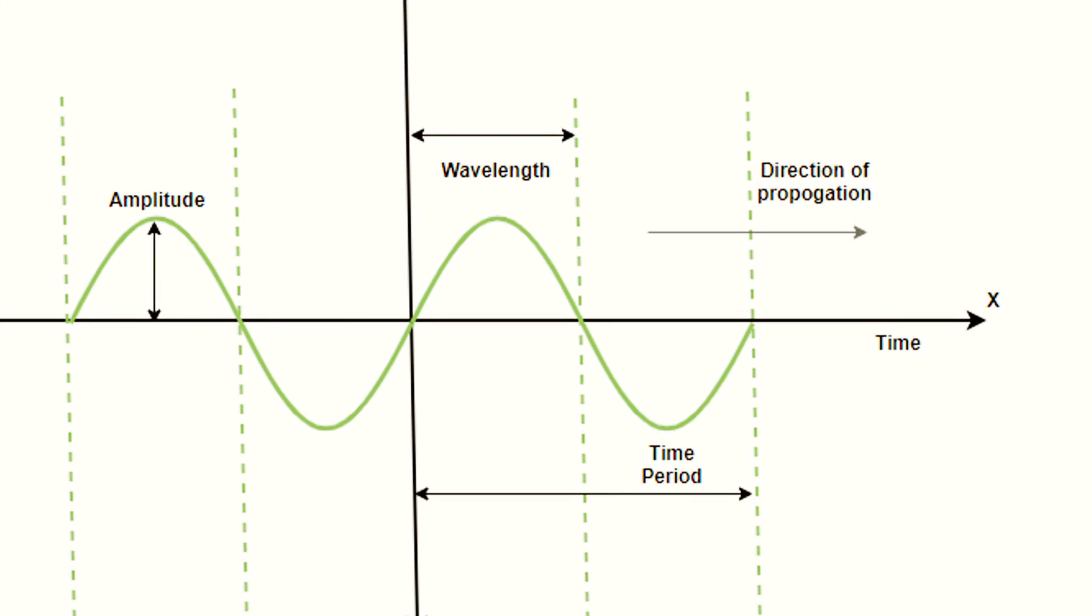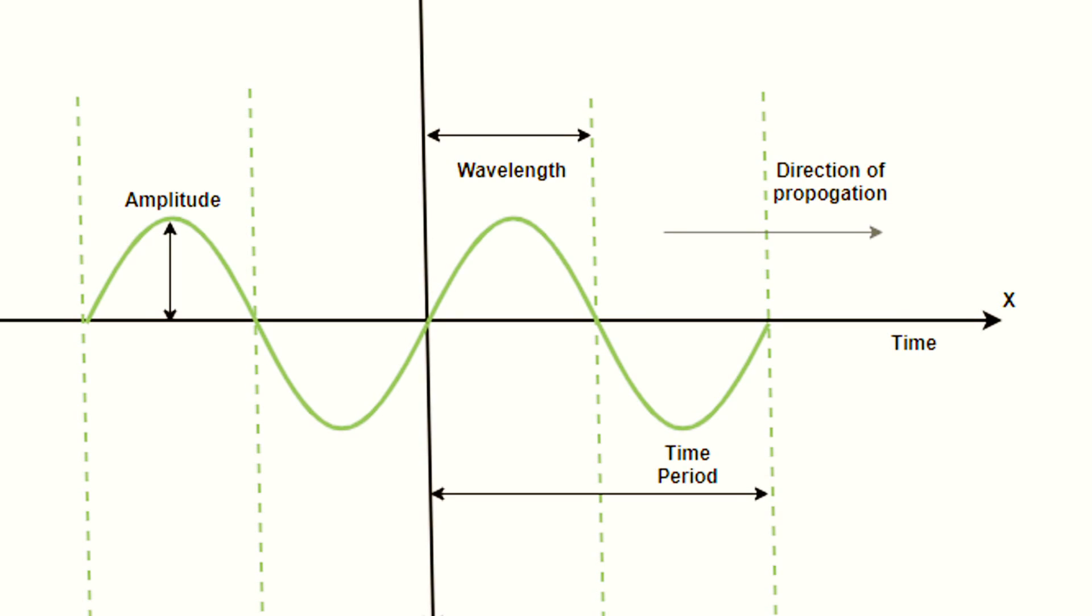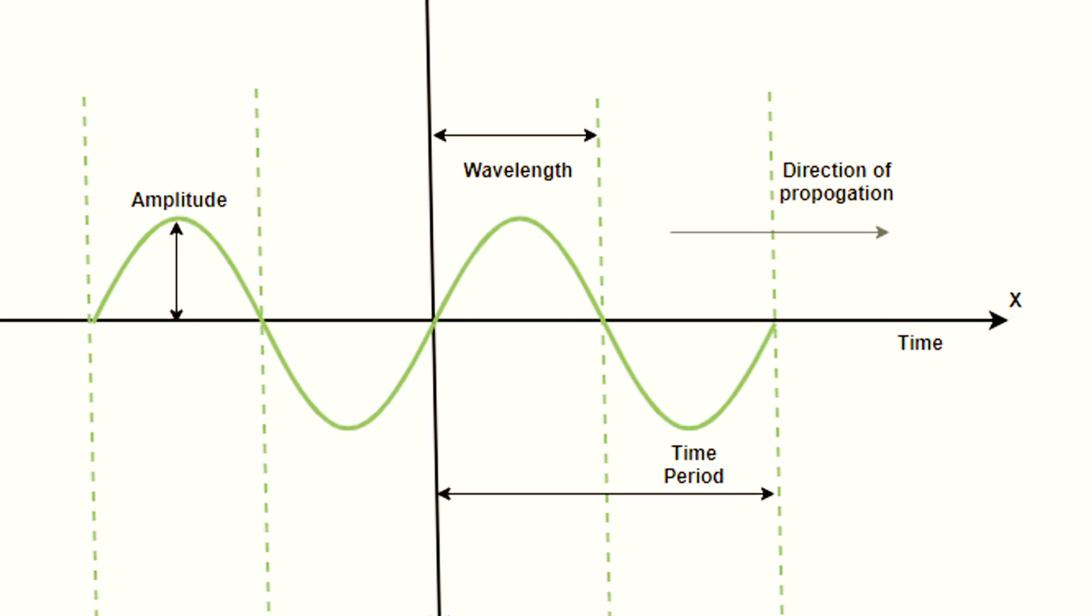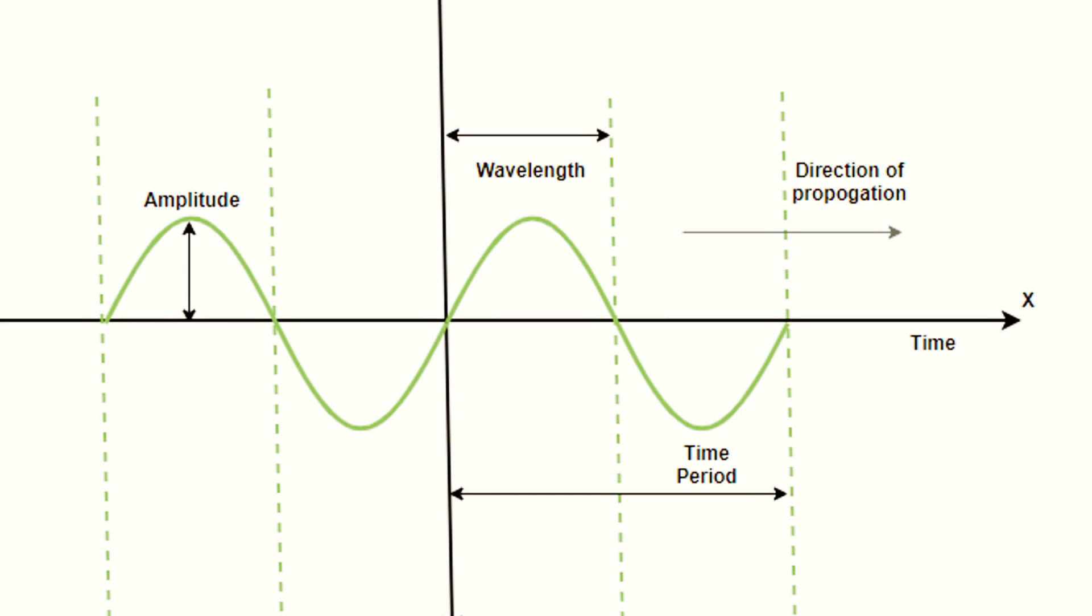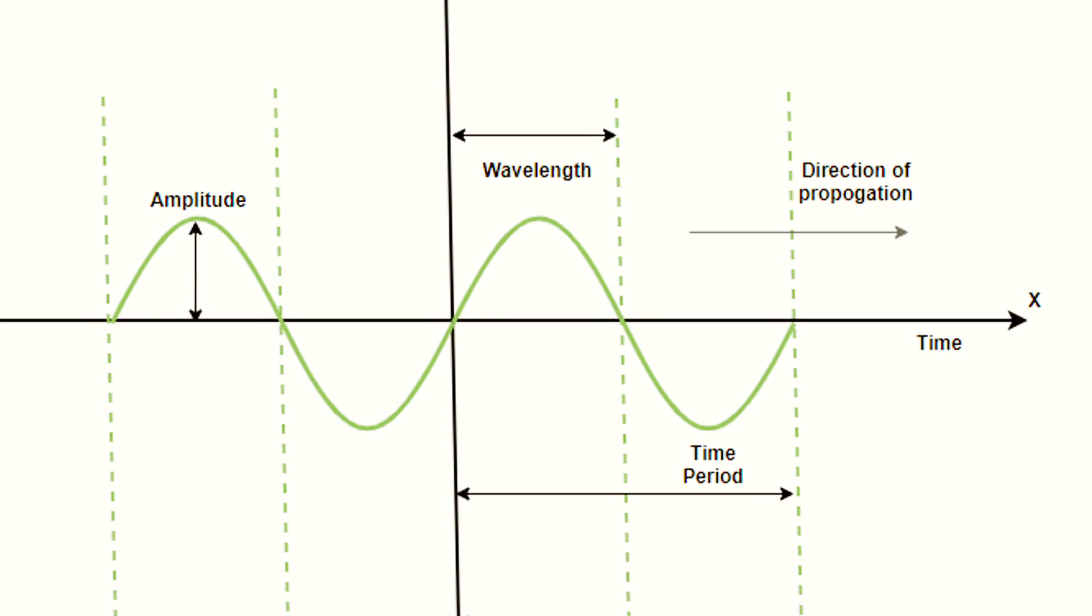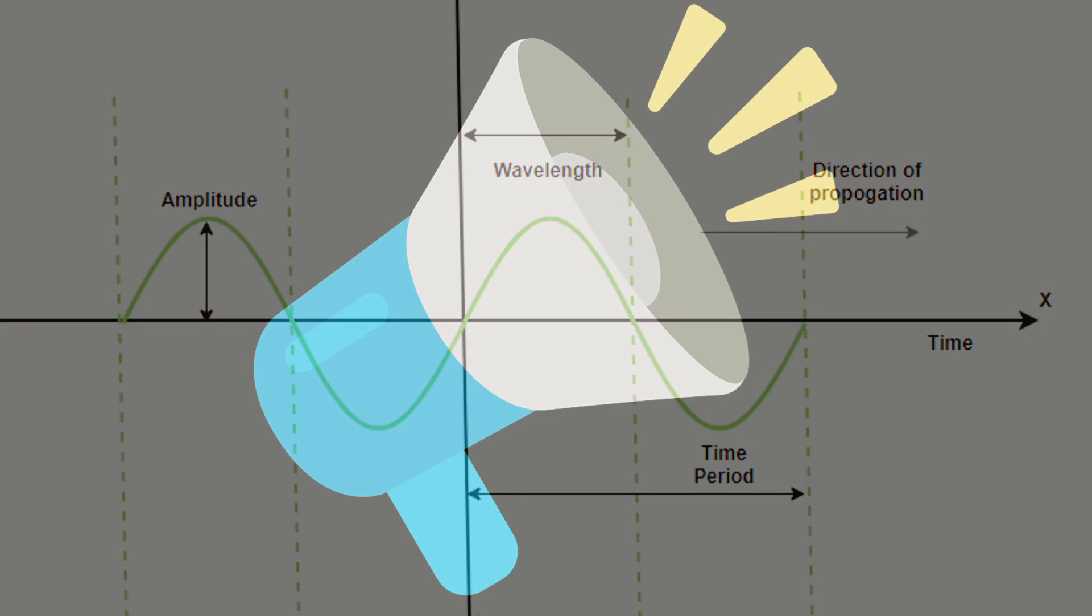The second property is amplitude, which is measured in decibels and refers to the height of the wave. The higher the amplitude, the louder the sound appears to the ears. So, it is amplitude which determines how strong or intense the sound appears to the ears.